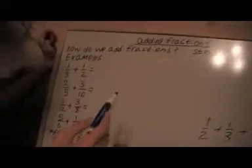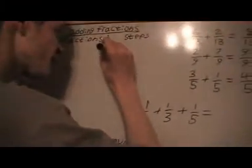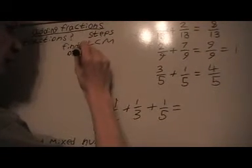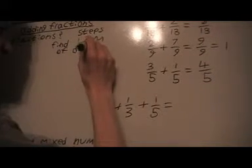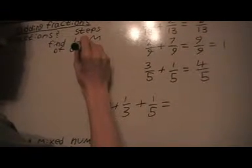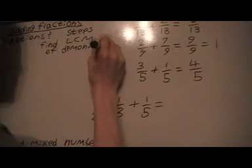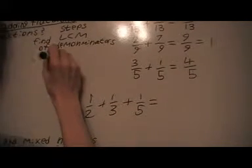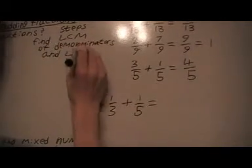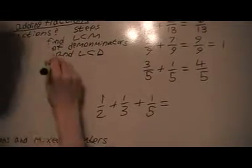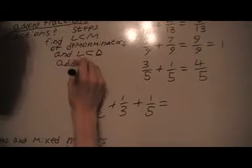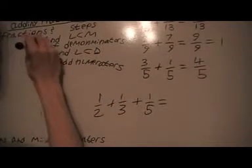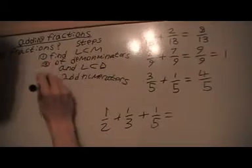So, the general step says we'll find the LCM of denominators. And write LCM, the lowest common denominator, and then add numerators.